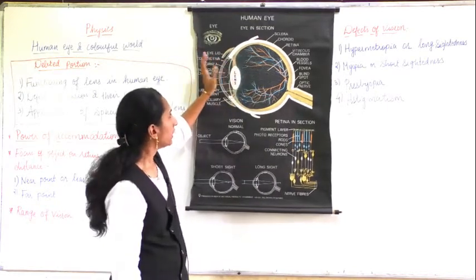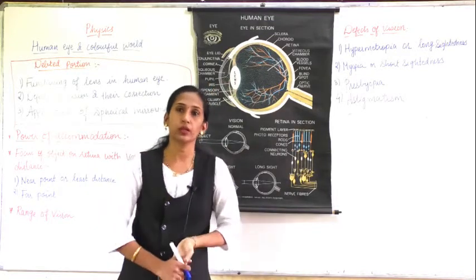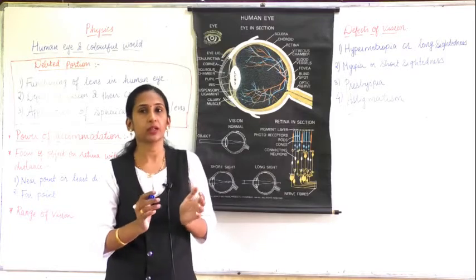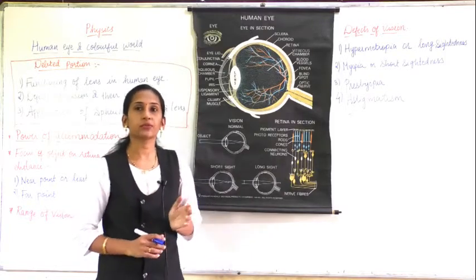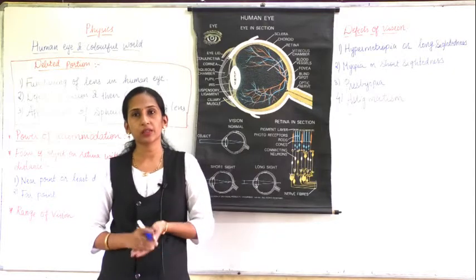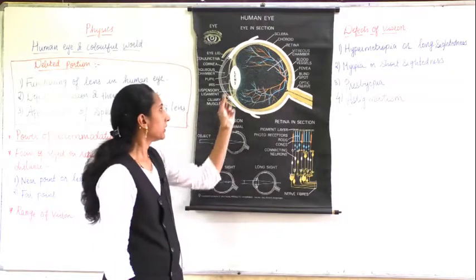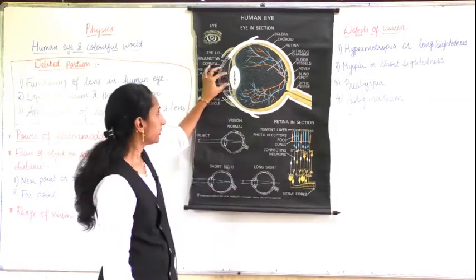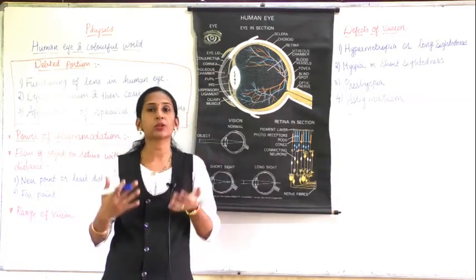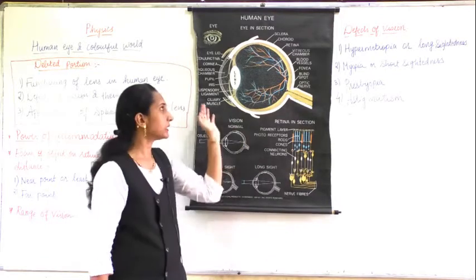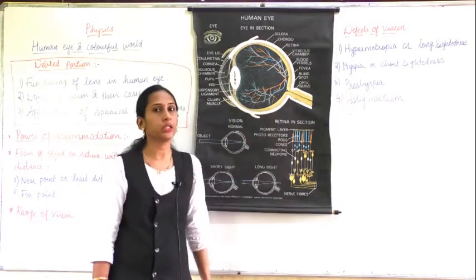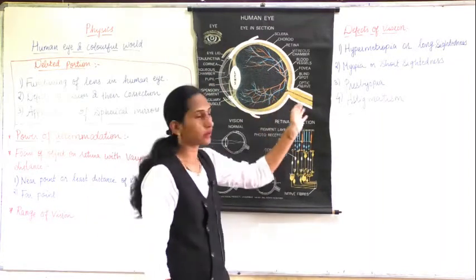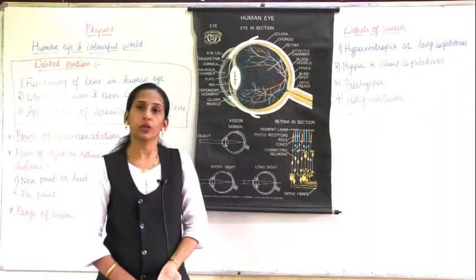The function of the pupil: when a large amount of light falls on your eyes, the pupil becomes small. In dim light, the pupil becomes big so that a larger amount of light can enter and you can see the object clearly. That is the function of the pupil.